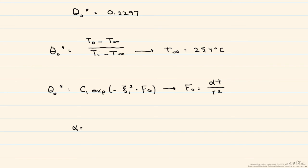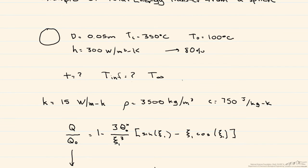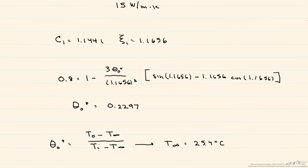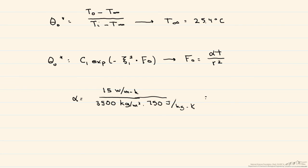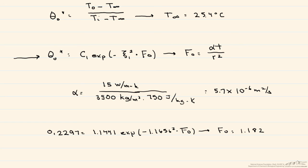Let's calculate alpha, our thermal diffusivity, using the thermal conductivity and other properties given at the beginning of the problem. Usually you would be given the solid material and look those properties up. We calculate alpha and get 5.7 times 10 to the minus 6 meters squared per second. Using this to solve for the Fourier number, we get 1.182, and from that we find a time equal to 129.5 seconds.